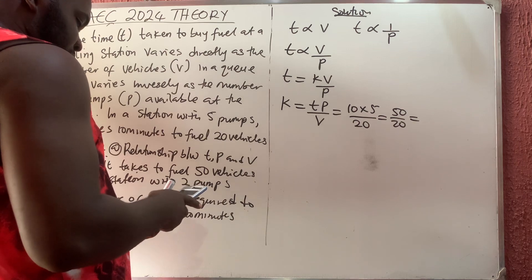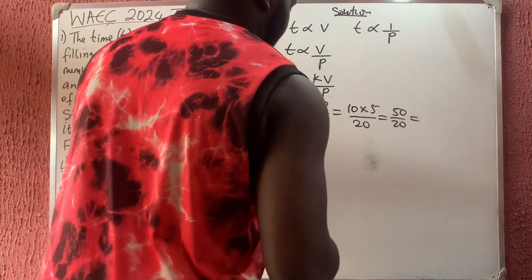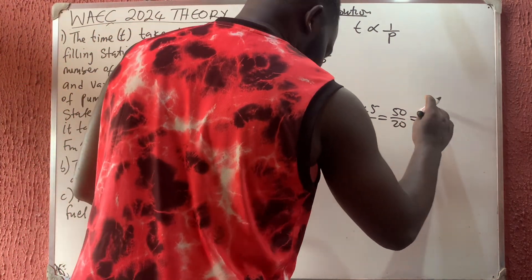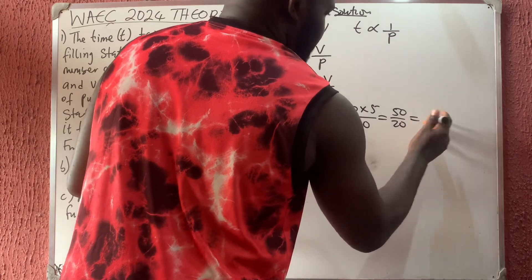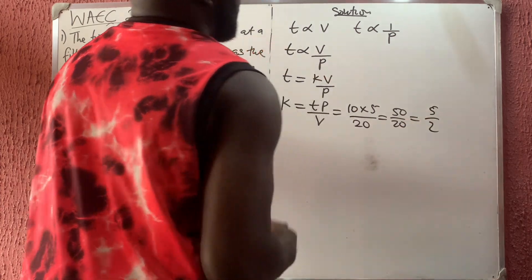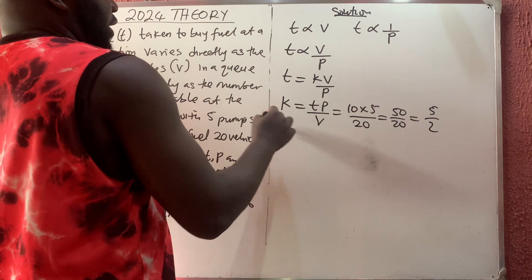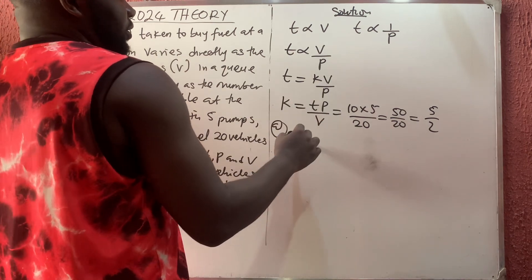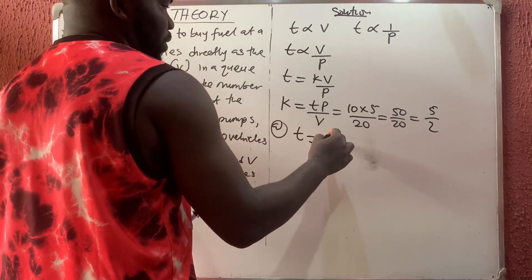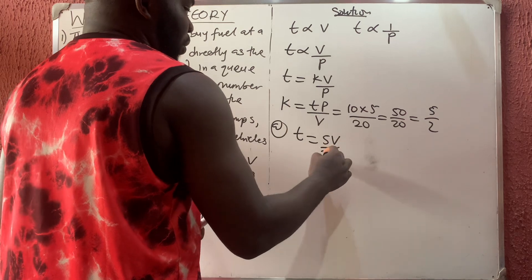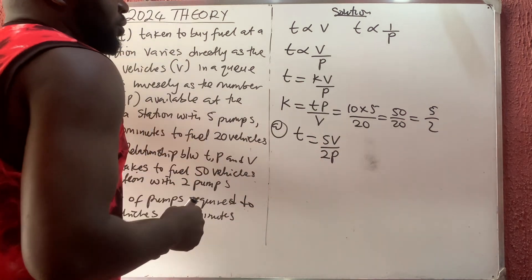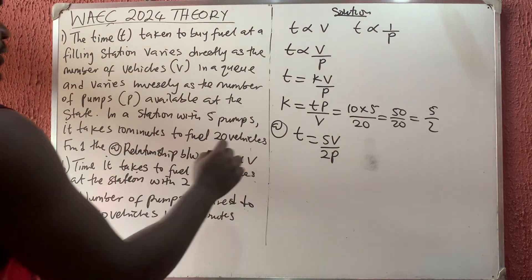So I have that k is 2.5 or 5 over 2. Let's leave it as 5 over 2. So the relationship a is simply to replace our k. The relationship is now t equals 5v over 2p. So that is the relationship for part a.